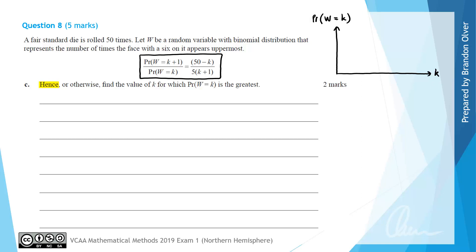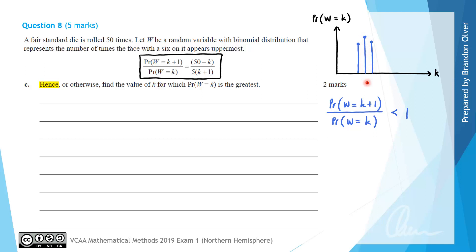For a binomial distribution, probabilities are associated with every value of K from 0 to 50. We're looking for the maximum probability value and the corresponding K. To find it using our ratio formula, we need the probability of W equaling K plus 1 divided by the probability of W equaling K to be less than 1 — meaning the next probability is less than the current (maximum) one.